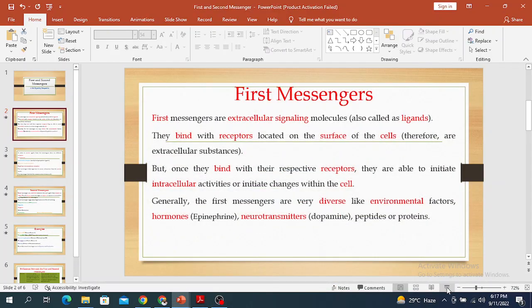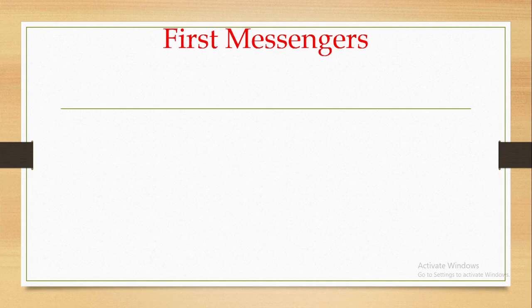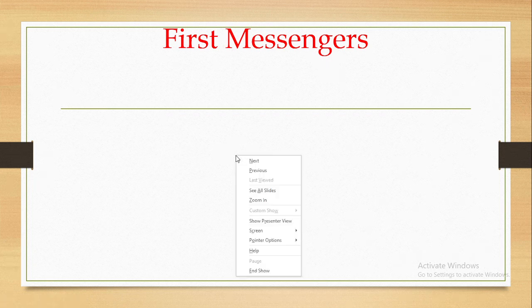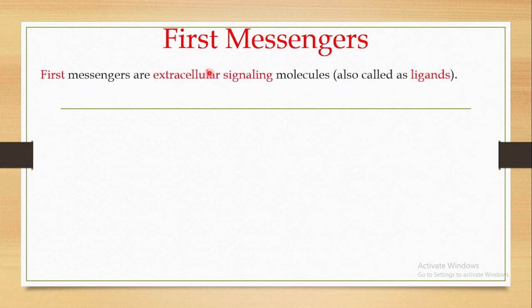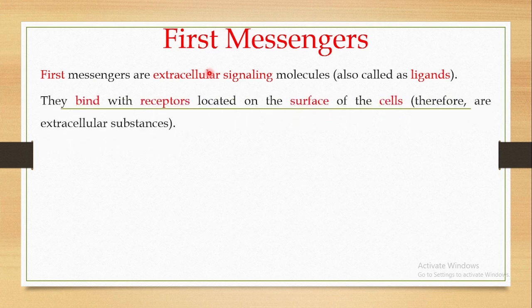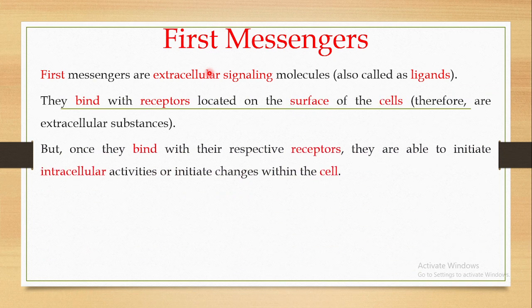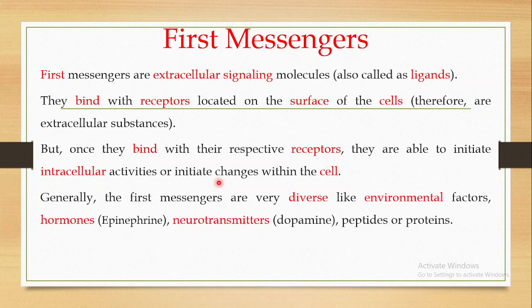Welcome back to this next video — this is Part 2 on the first and second messengers. In my previous video, I told you that the first messengers are extracellular signaling molecules that bind to their receptors present on the surface of cells, thereby initiating intracellular activities or initiating changes within the cell, in most cases changes in gene expression.